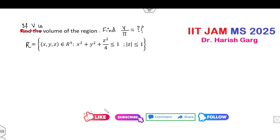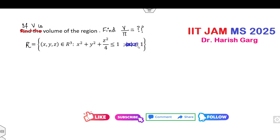If you read the statement carefully, you have to find the volume of the region. Since this is a memory based question, I will consider two different cases. Case one: I assume the restriction is not given to you — how can you find the volume of the region? Second, I'll give the solution if that condition is given. So firstly, assume this condition is not given — how do you find the volume divided by pi?